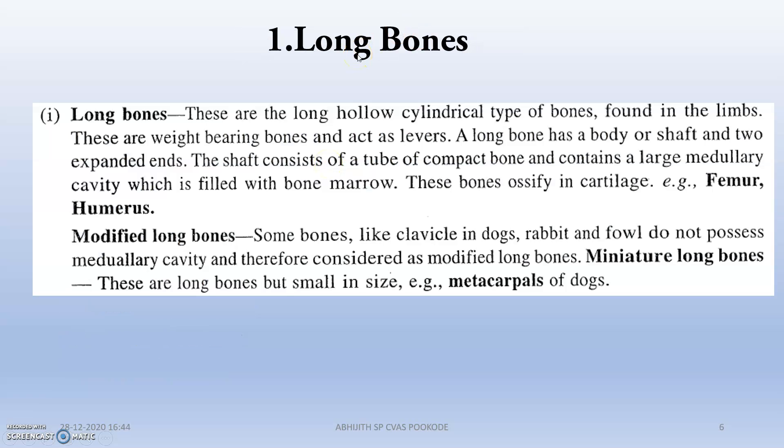Long bones are long, hollow, cylindrical-type bones which are found in the limbs. They are the weight-bearing bones and act as levers. A long bone has a body or shaft and two expanded ends, like joints, which help the bones connect to the body. The shaft consists of a cylindrical compact bone and contains large medullary cavities filled with bone marrow. These bones ossify in cartilage — examples include the femur, humerus, radius, and ulna.